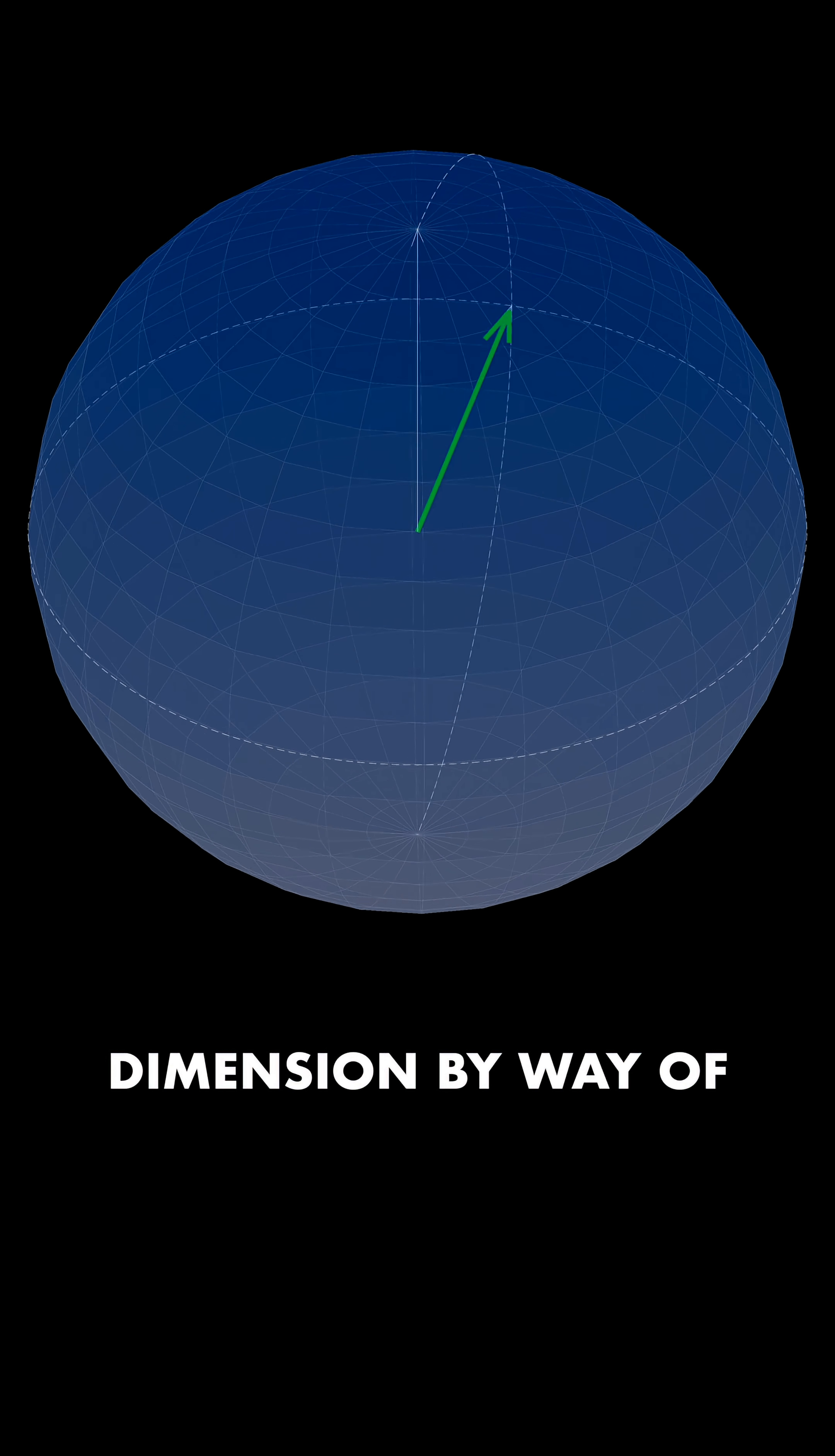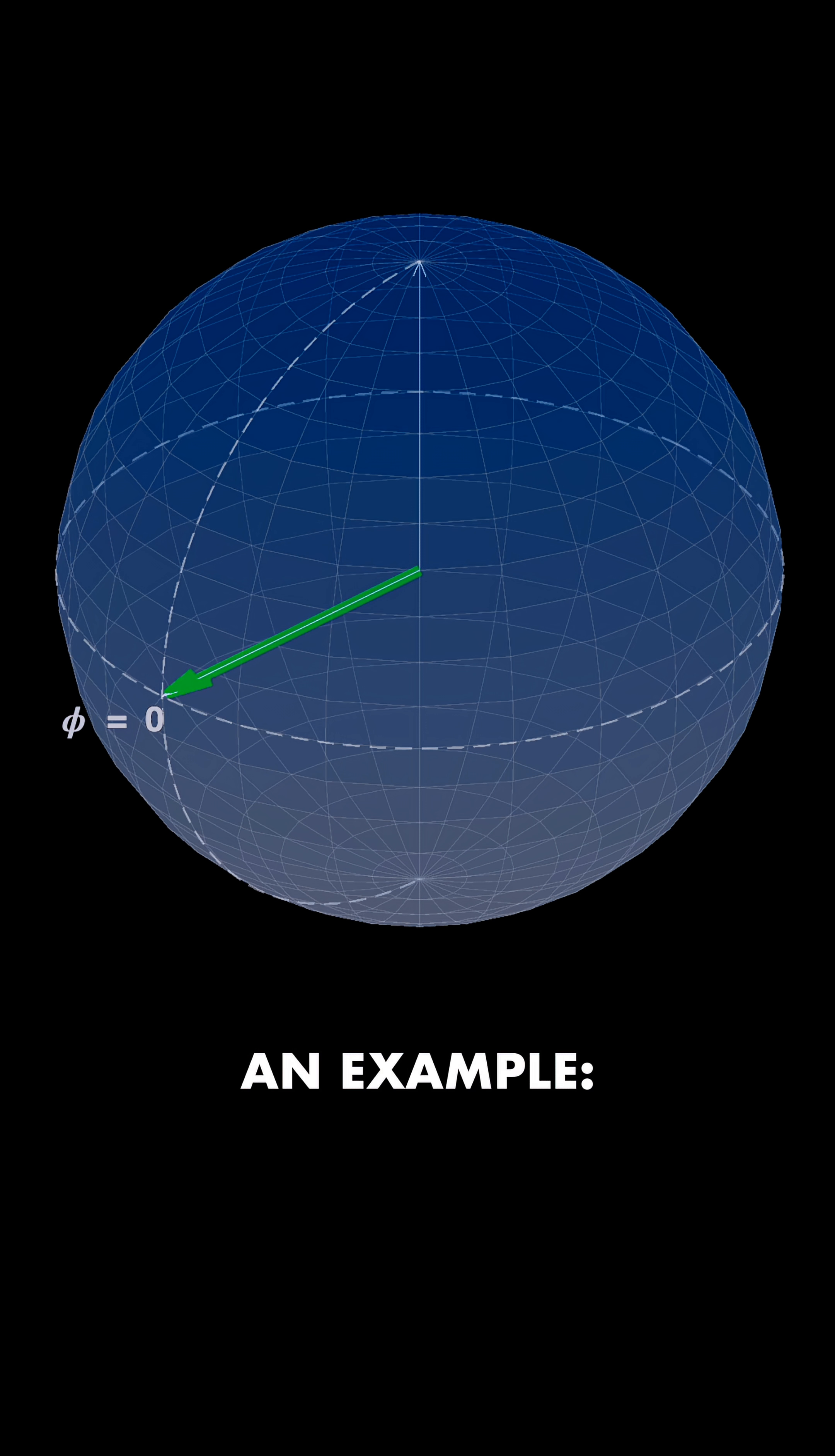First, it's easiest to understand dimension by way of an example. A curve that can be completely described by a single number is a one-dimensional object. For example, your position on the equator can be described by a single number, its longitude.